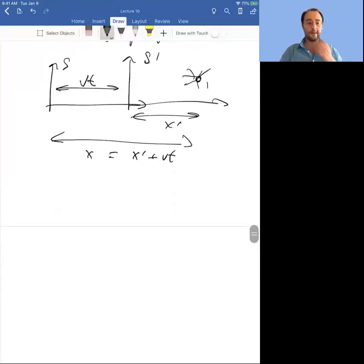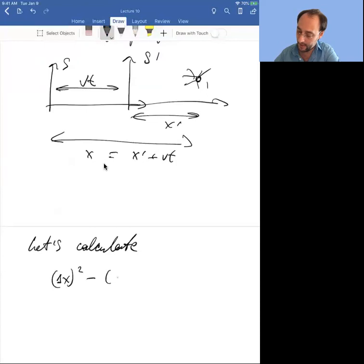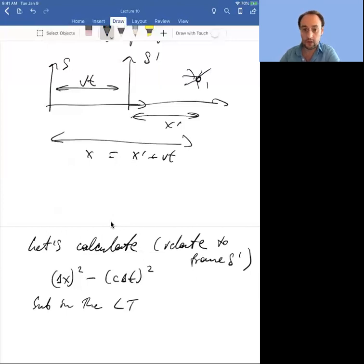Okay, so let's consider the following quantity just out of the blue. Let's calculate delta x squared minus c delta t squared. Let's just grind through, we know how to compute this quantity. What I mean by calculate is relate to frame S prime. So substitute in the Lorentz transformations of interval form.